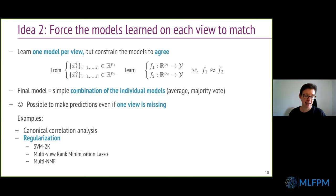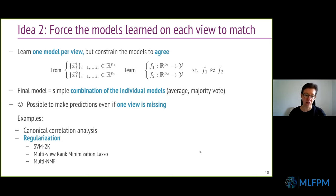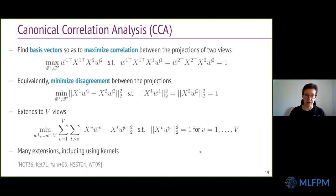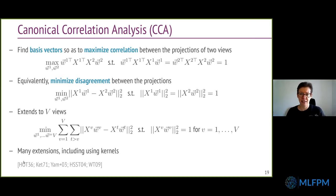Two major ideas in this family: one is CCA and the other is imposing agreement through regularization. CCA (canonical correlation analysis) is a really old technique — Hotelling 1936, almost a hundred years old.